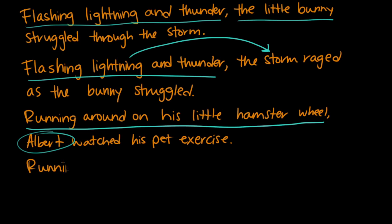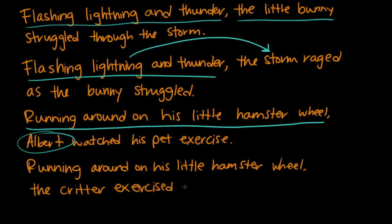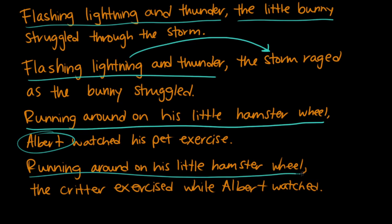Yeah, exactly. Running around on his little hamster wheel, the critter exercised while Albert watched. So this is how we made our change. We still have running around on his little hamster wheel at the beginning, but then we switched around the order of Albert and his pet. So now we have the critter following the modifier that it's supposed to be modified by. So that is dangling modifiers and how you get rid of them.